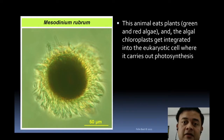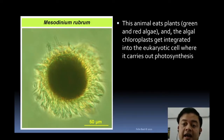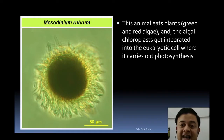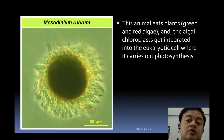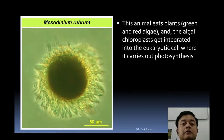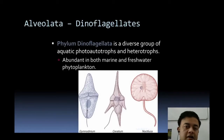Another fascinating organism covered in an earlier lecture is Mesodinium rubrum, a very bizarre ciliate. This organism can eat green and red algae, and the algal chloroplasts become integrated into its cell — not simply digested but stolen. This stolen chloroplast is called a kleptoplast, and it continues to carry out photosynthesis within the eukaryotic cell.